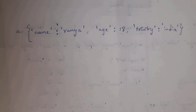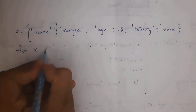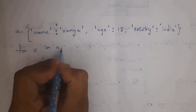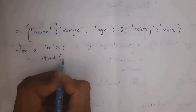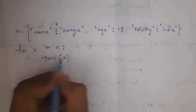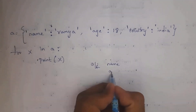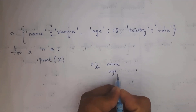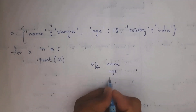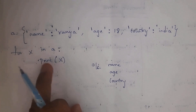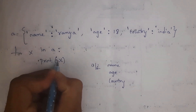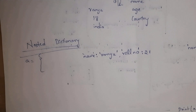With a = {'name': 'ramian', 'age': 18, 'country': 'india'}, you can print only keys one by one using a for loop. Write: for x in a: print(x). This will print each key one by one — first 'name', then 'age', then 'country'. To print only values instead, replace print(x) with print(a[x]) inside the for loop.